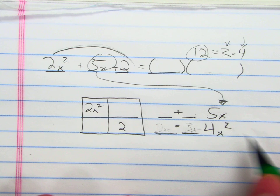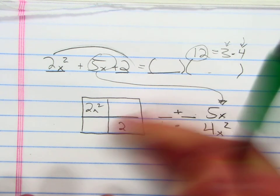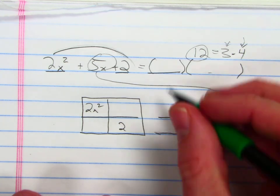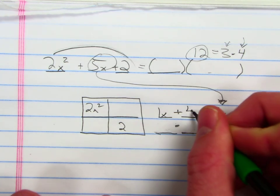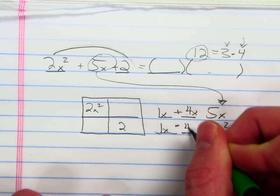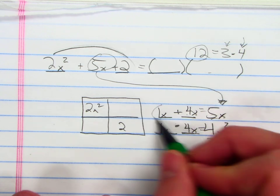So instead of using 2x and 3x, what else adds to make 5x? I think 1x and 4x, whenever I add those I get 5x. What happens when I multiply 1x and 4x? Oh, I get 4x squared. So I know that I'm going to use 1x and 4x in my other two boxes.